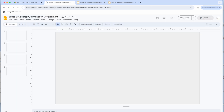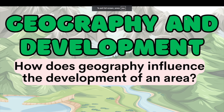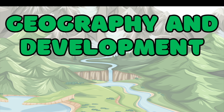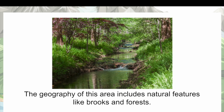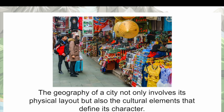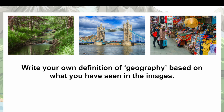I love making mini units because I like lessons that flow — I don't like haphazard lessons pulled from here and there. This is the same essential question for the whole mini unit, with a blank page if you want to change it. The focus question for lesson two is: in what ways does the geography of New Delhi, India, influence its development? The learning target is: I'll be able to define geography and apply this definition to identify specific examples of geography's impact on development in New Delhi. Again, we start with image analysis — students look at images of the area and try to come up with a definition of geography, then write their own definition.